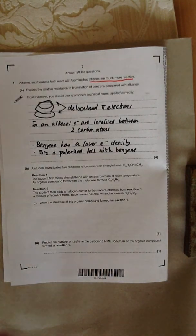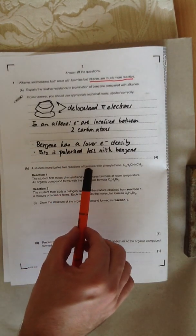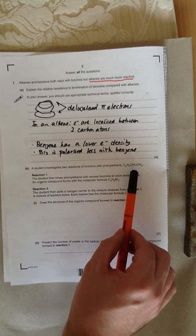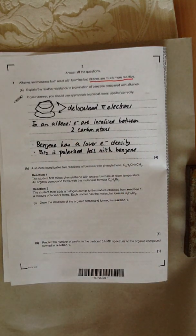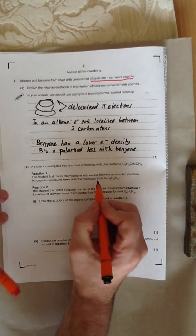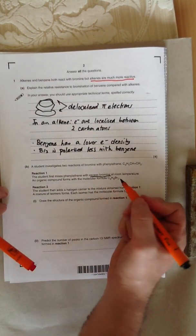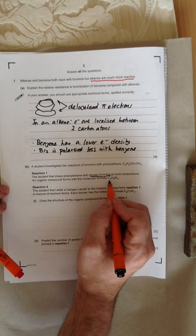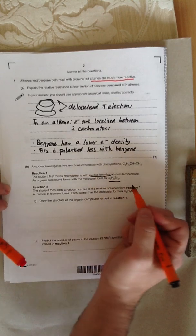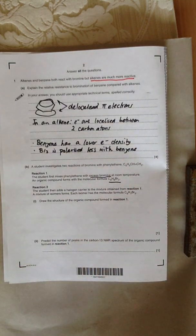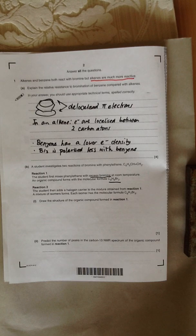The question goes on to say, a student investigates two reactions of bromine with phenyl ethene, C6H5 CH double bond CH2. The student mixes phenyl ethene with excess bromine, that's important, at room temperature. An organic compound forms with the molecular formula C8H8Br2. Draw the structure of the organic product formed in reaction 1. First things first, the benzene ring is going to be intact.